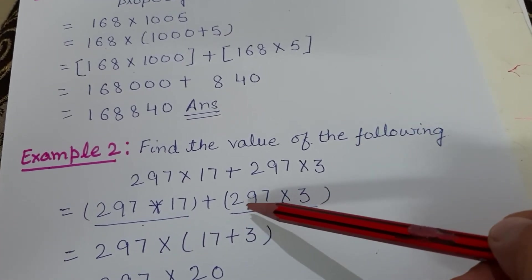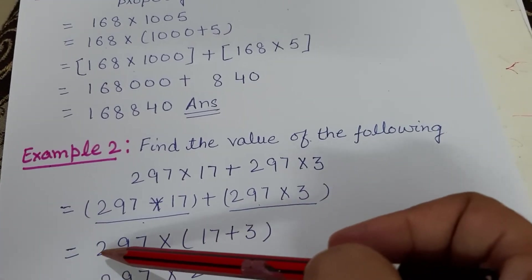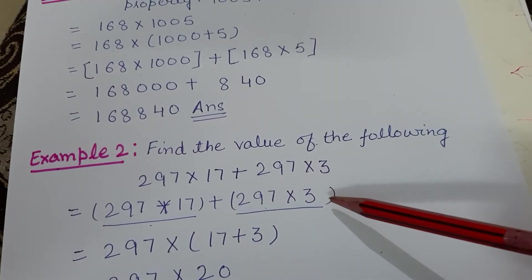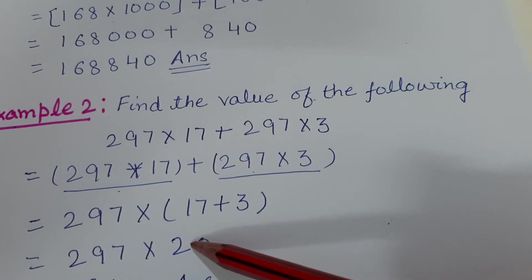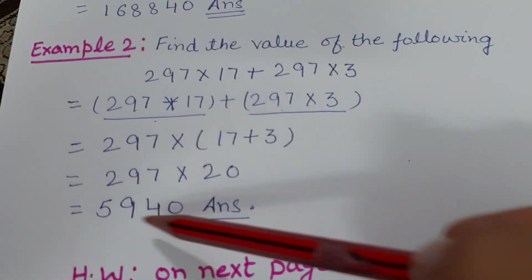Now what is left to multiply inside? Out of these two, 297 is written outside, so what is left is 17. In this one, 297 is written outside, so what is left is 3. So 17 plus 3 is 20. Now you can multiply it horizontally.